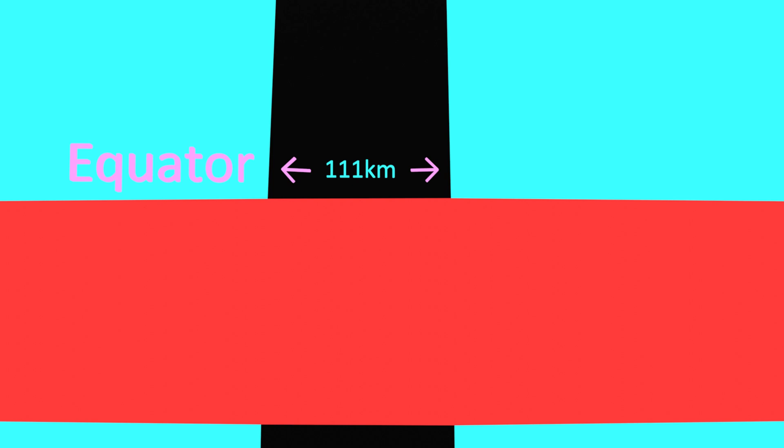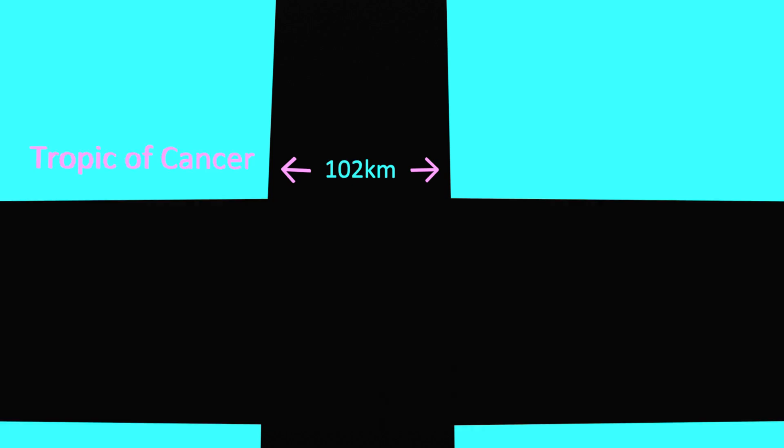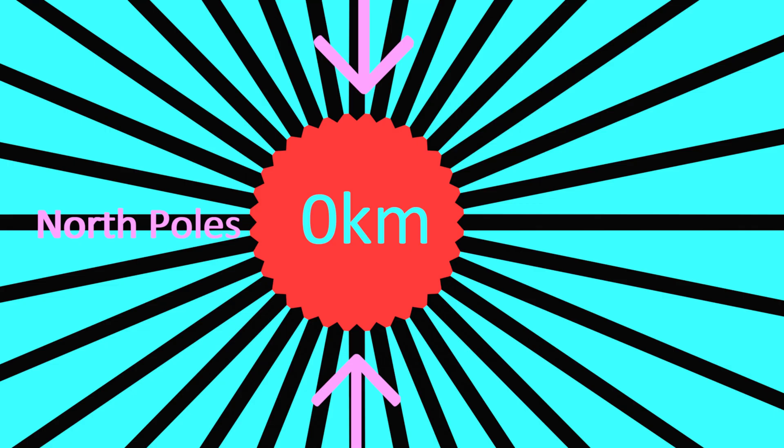At the equator, the distance between two meridians is 111 km. At the Tropic of Cancer, it comes to around 102 km. At the Arctic Circle, it is around 44 km. At the North Pole and South Pole, it is 0 km.